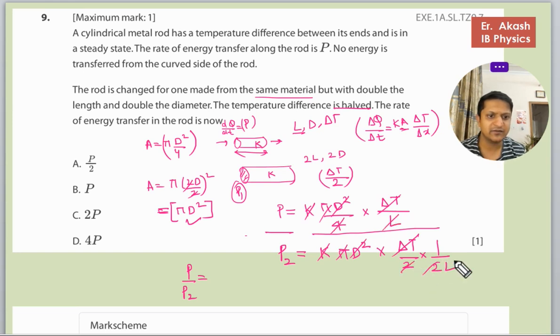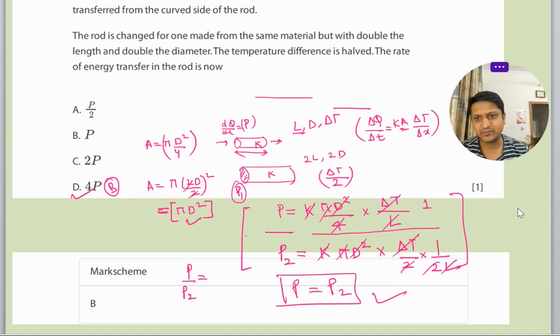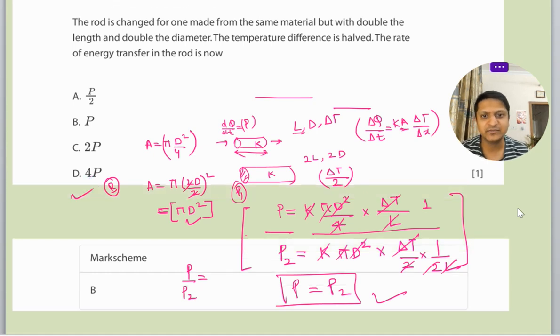4 with 4, this 2 times 2 is 4. And L is L. So all has been reduced. The rate of change will be same, so it will be same as P. So P will be the right answer for this. Yes, the mark scheme says P is the right answer.